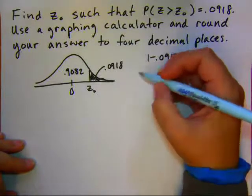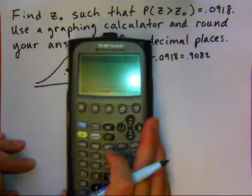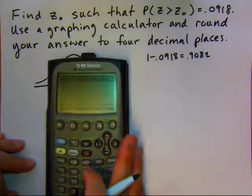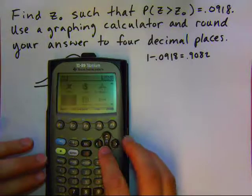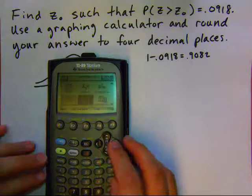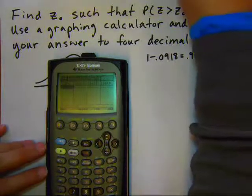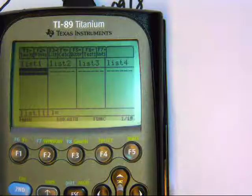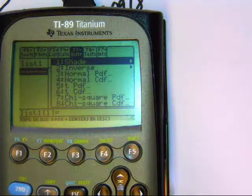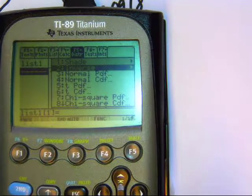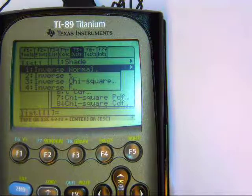So now we want to find the probability on our calculator. I'm going to do this on the TI-89. Works very similar on the TI-84. We're going to go to the app called StatList Editor. In our StatList Editor, we're going to want to go to F5, which is the distribution menu. And we want the inverse. That's going to go backwards and give us a Z-score. And the inverse normal.